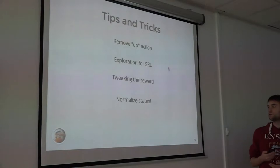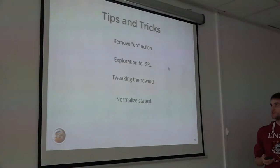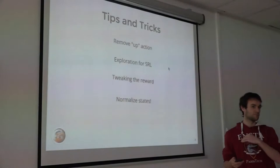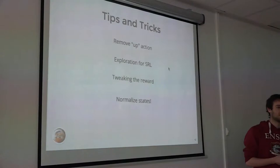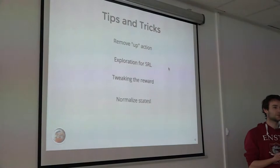As Florian says: always normalize your states. Last week I was presenting a curve where ground truth was performing worse than the variational autoencoder, which was weird. I normalized the states and then the results were much more stable and it was working better for ground truth. So: always normalize your states.